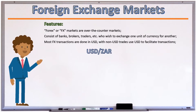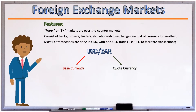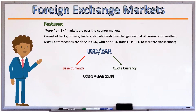When FX rates are quoted, they are quoted in pairs. The first in the pair is referred to as the base currency, and the second is referred to as the quote currency. The value of the base currency is always 1; in other words, the quote currency is expressed per unit of base currency.